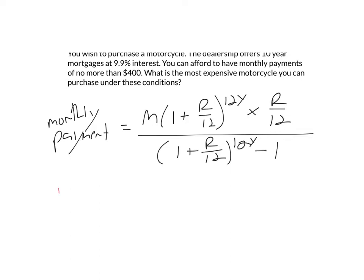And here the variables are M, how much money you're mortgaging, R, the interest rate, and Y, the number of years.